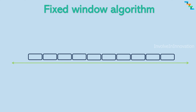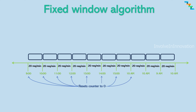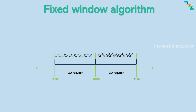Now we will see different rate limiting algorithms. First is the fixed window algorithm, one of the most basic rate limiting algorithms. It is a simple approach to control the rate at which clients can access a particular service or endpoint. It imposes a constant fixed limit on the number of requests a client can make within a specific time window. Once the limit is reached, any additional requests within that fixed window are rejected with a 429 too many requests response code.